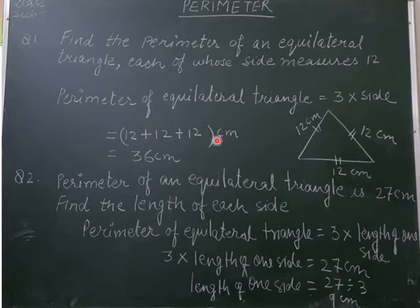3 into side equals 12 plus 12 plus 12 cm is equal to 36 cm. So, perimeter of equilateral triangle is equal to 36 cm.